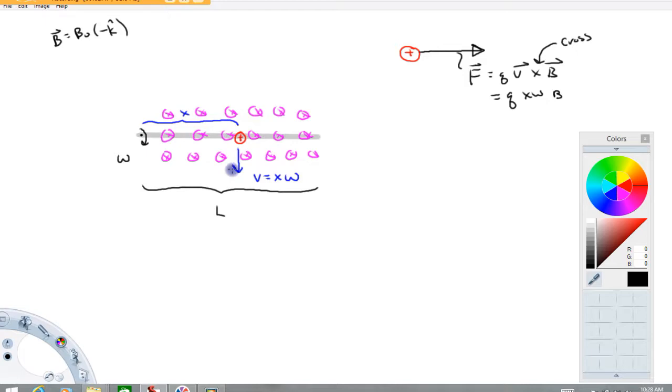So q times x times the angular speed times the magnetic field times the sine of the angle between the velocity and the magnetic field. And I look right here, the velocity vector is down. That's in the minus j direction in what I always call a standard x, y, z coordinate system. The magnetic field vector is in the minus k direction. Angle between them is 90, sine of 90 is 1.